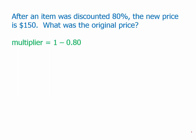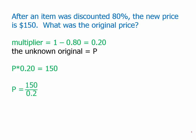One way to approach this is with the multiplier. So 80% as a decimal is 0.8. One minus 0.8 is 0.2. So that's the multiplier for an 80% decrease. We'll say the original unknown price is P. So P times 0.2 equals 150.